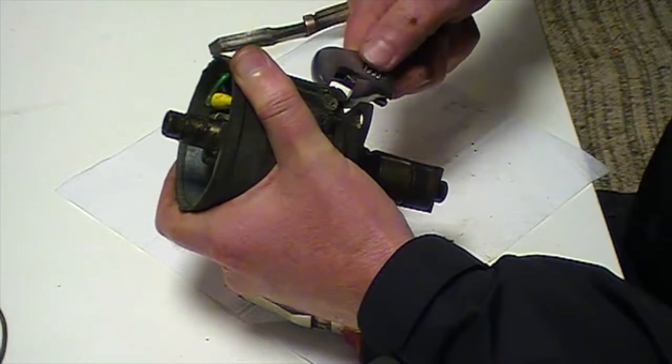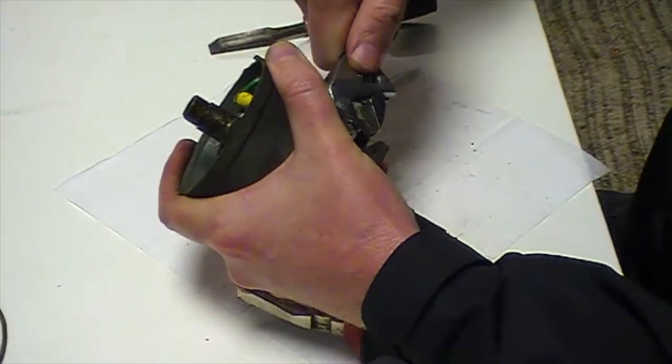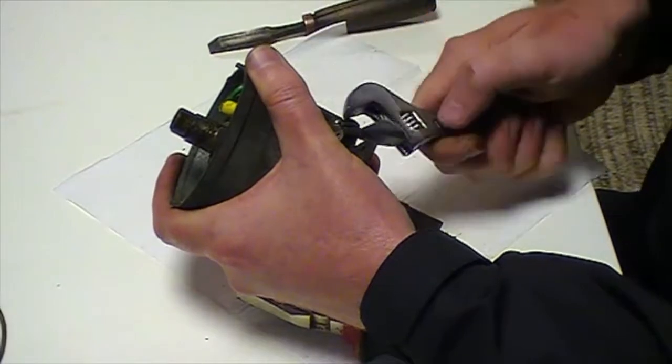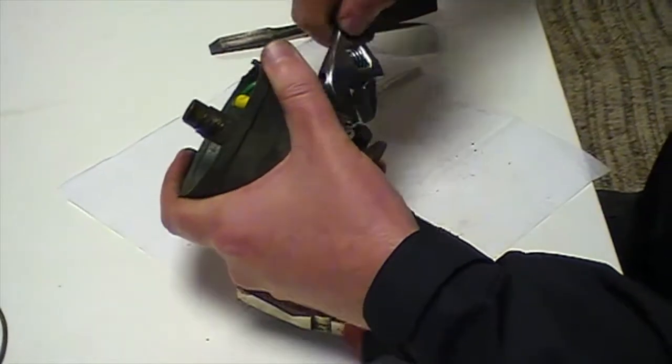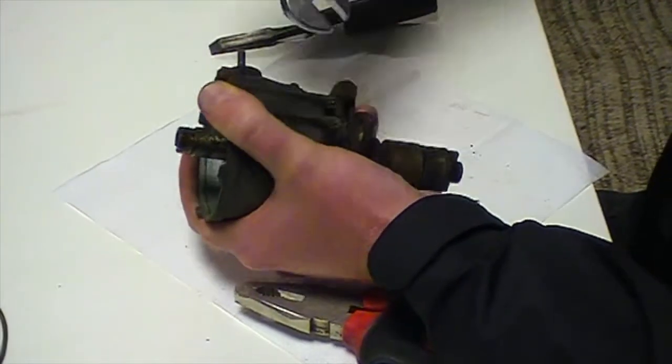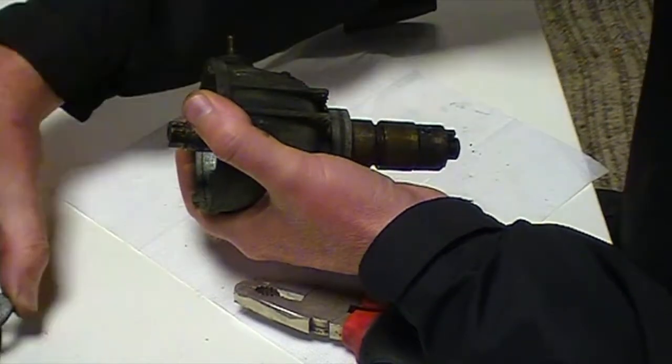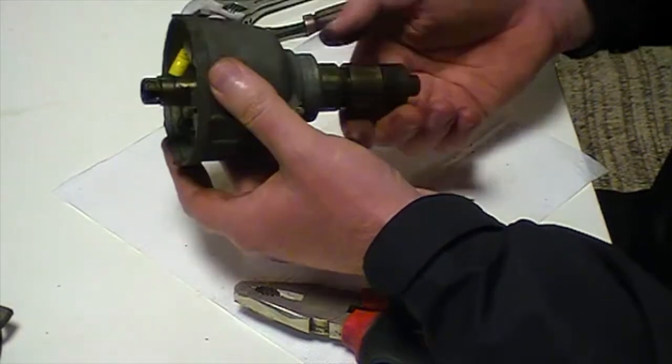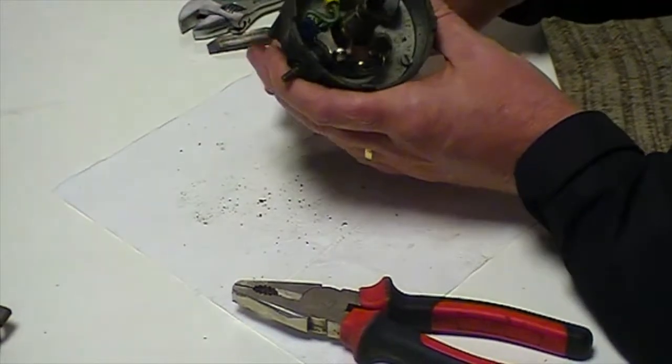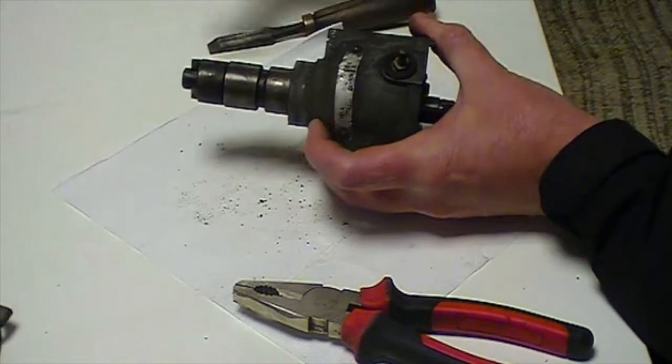Next thing to get out of the way is the bracket at the bottom. This is the bracket which holds the distributor in place once you've set the timing on the engine. It just has a single bolt clamp, which is quite easy to remove, and then the whole thing just slides off the bottom. That cleans up nice and clean, and it always looks good if you give those a little bit of a polish as well.